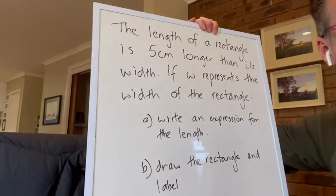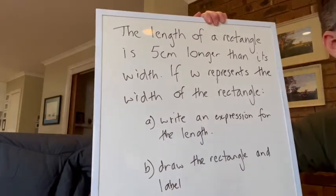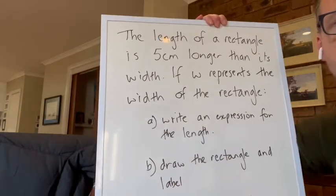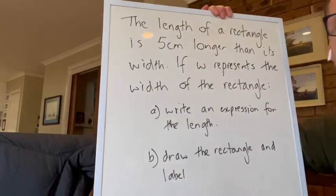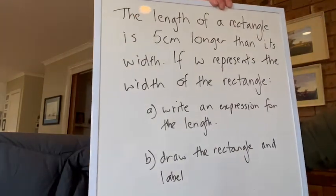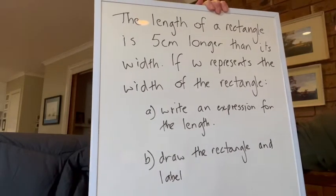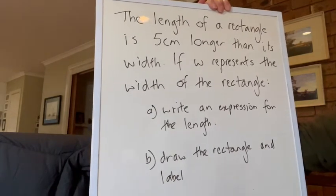Okay, so here we have a word problem that has quite a common element, and that is the idea of a rectangle. I'll get onto why they use that a bit later, but let's read through the question. It says the length of a rectangle is five centimeters longer than its width, which means plus five.